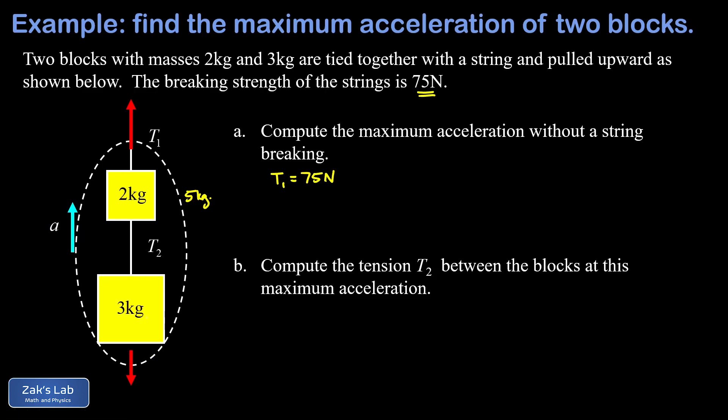So we'll go ahead and write in the magnitude of our force of gravity here - that's mg - and we're using a total mass of five kilograms and then g is 9.8 meters per second squared. And when we run the numbers here we end up with 49 newtons for the force of gravity pulling down.